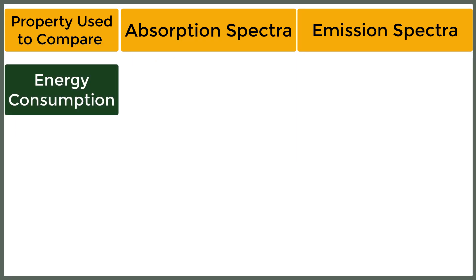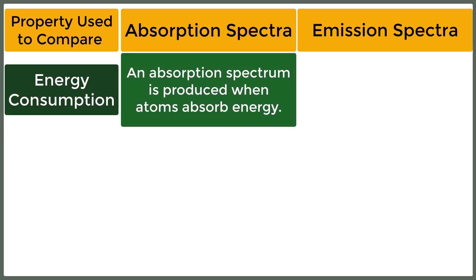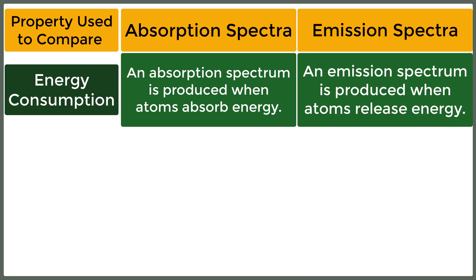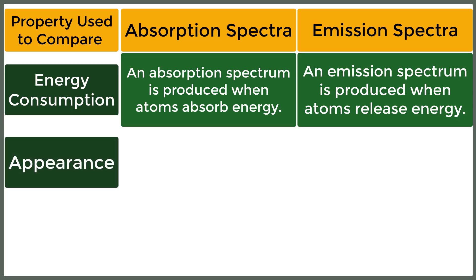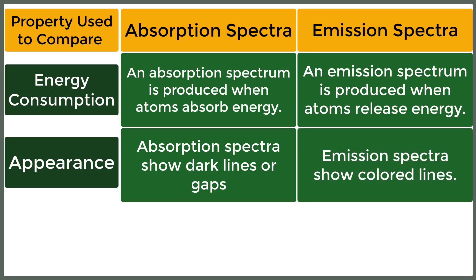An absorption spectrum is produced when atoms absorb energy. An emission spectrum is produced when atoms release energy. Absorption spectra show dark lines or gaps, while emission spectra show colored lines.